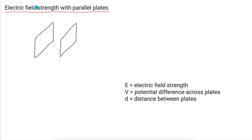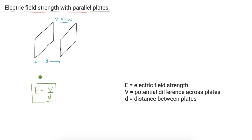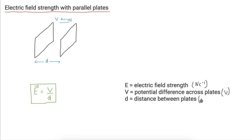We can also define electric field strength for parallel plates. If you've got a potential difference V across two plates separated by distance D, the electric field strength is E equals V over D. This is in your data booklet. E is in Newtons per Coulomb, V is in Volts, and D is in meters.